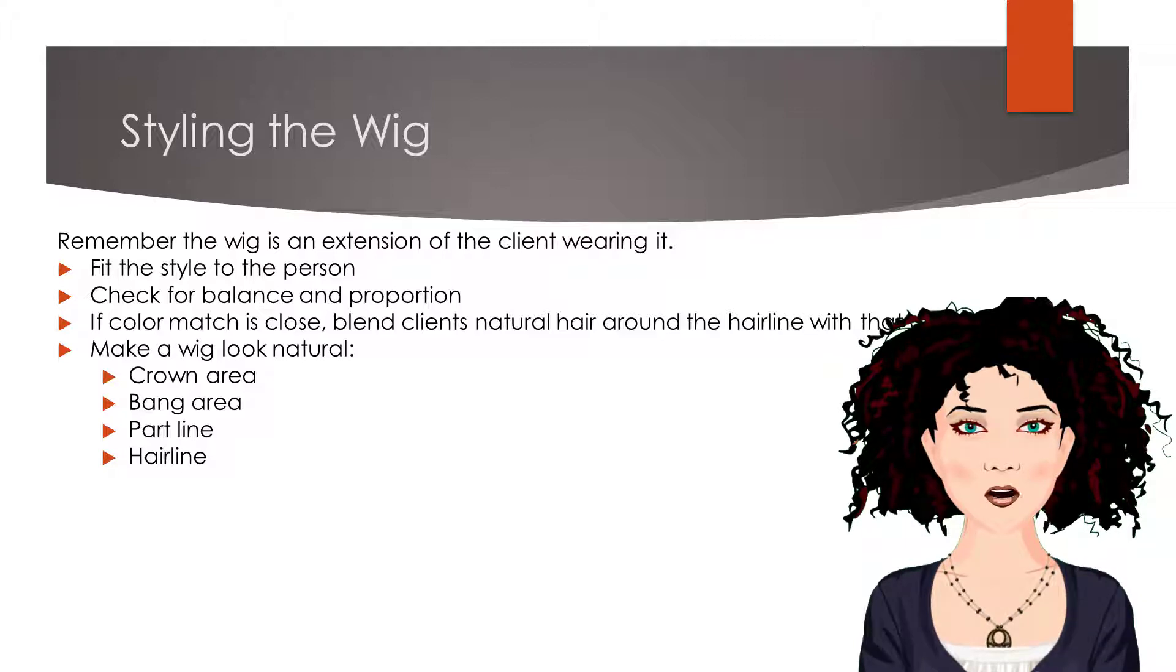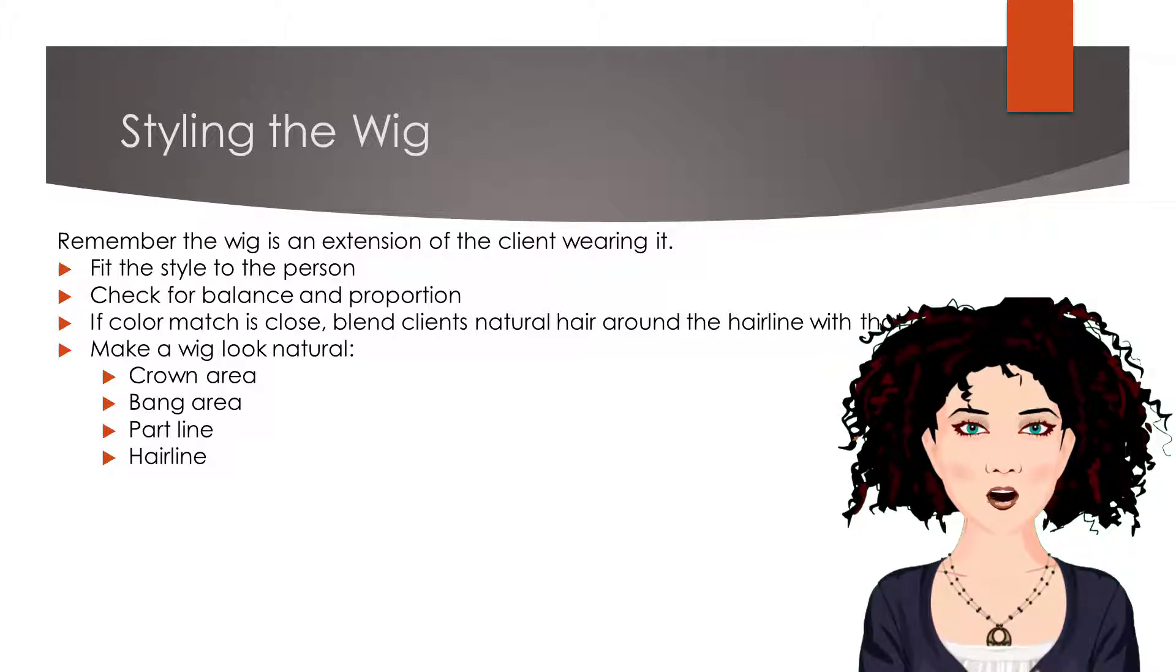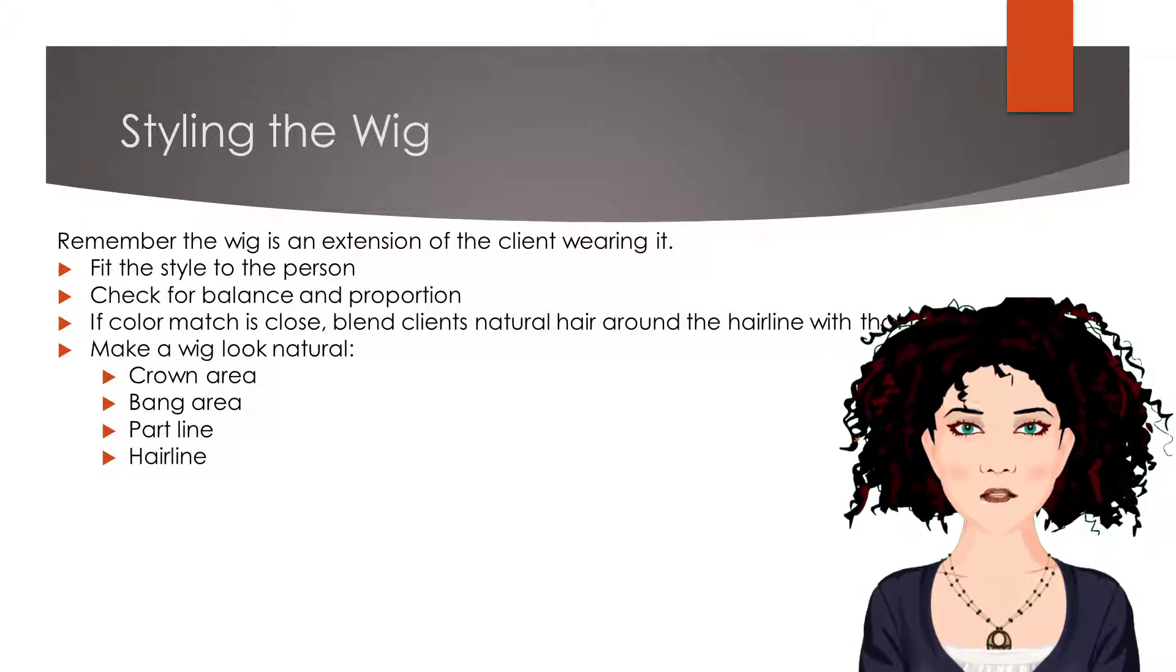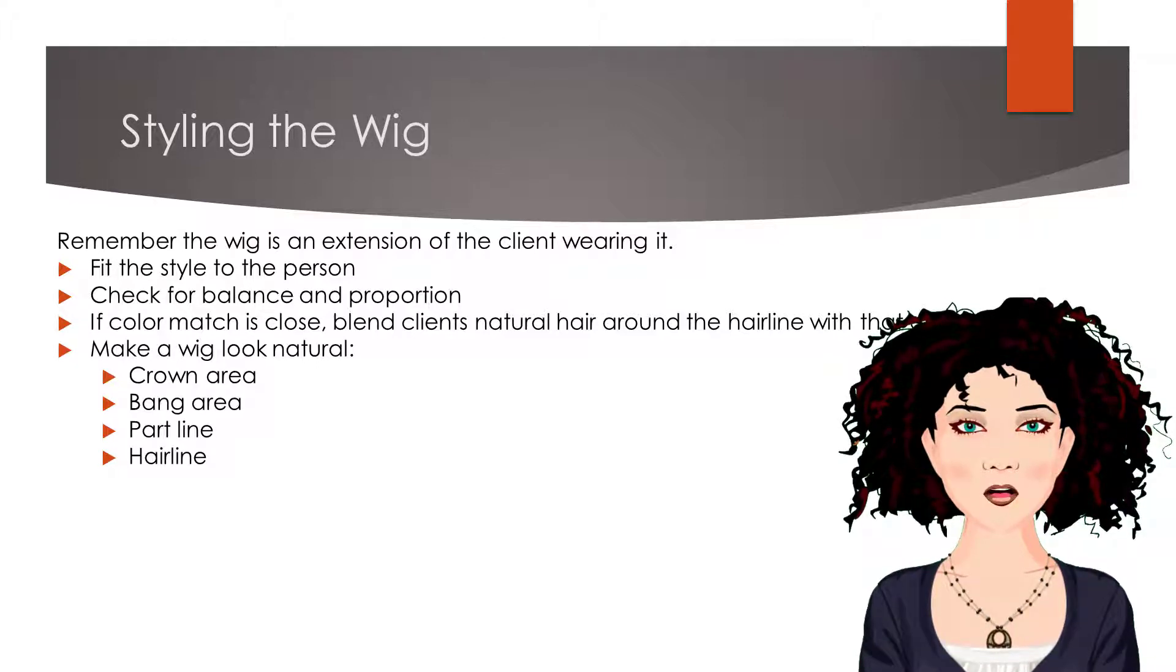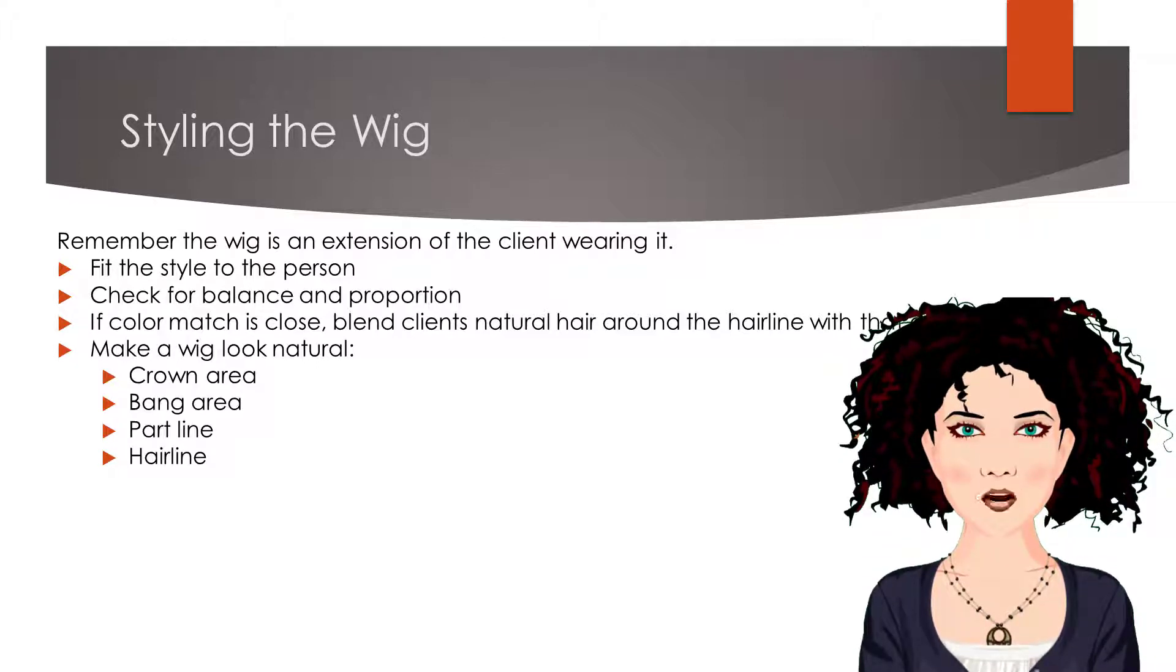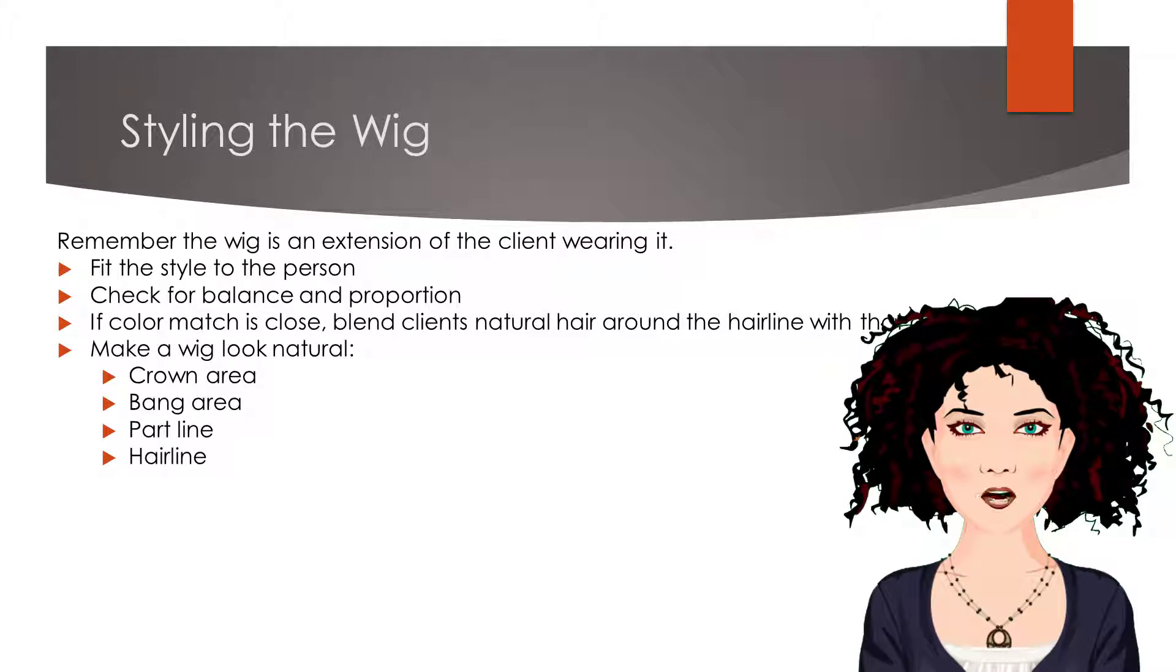Do not try to make it look perfect as the imperfections are what help to make the wig look more realistic. The areas that need the most attention to detail will be the crown, the bangs, the part line, and the hairline, as these areas will be the most noticeable when a wig is not appropriately styled.